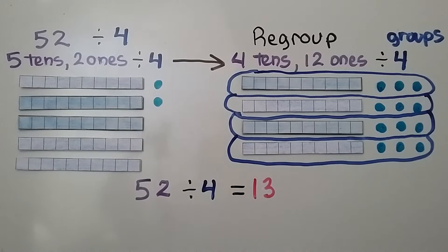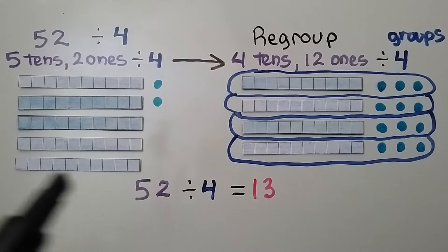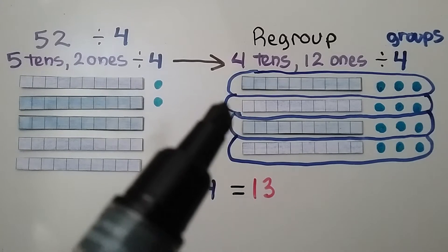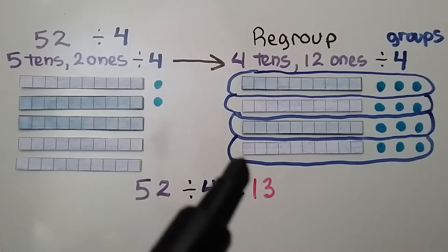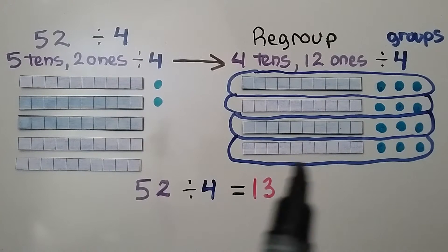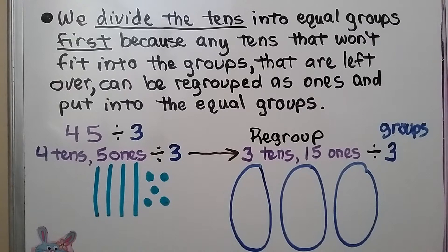Here we have 52 divided by 4. 52 is five tens and two ones. We regroup the five tens and two ones as four tens and twelve ones — we break apart one of the tens into ones and regroup it to the ones place, giving us 12 ones. We put one ten into each of the four groups, then divide the ones evenly. We can see there are 13 in each group, so 52 divided by 4 equals 13.